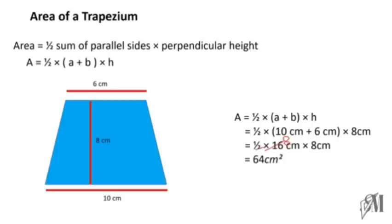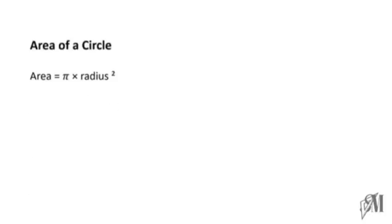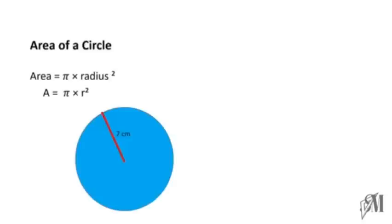Moving on to the next type of plane figures, which is a circle. The area of a circle is equal to the constant pi into the square of its radius. I hope you remember what radius is and the value of pi, because you have already learned it when you studied the circumference of a circle. We write it as A = π r squared. Suppose there is a circle whose radius is 7 centimeters. A = π r squared, and the constant π equals 22 over 7, which in decimals is 3.14, and r squared is 7 into 7.